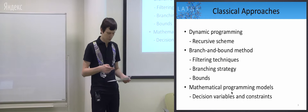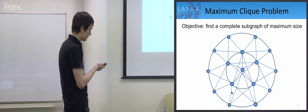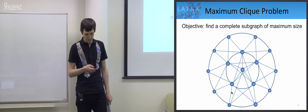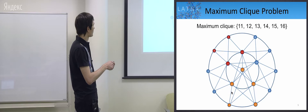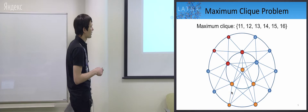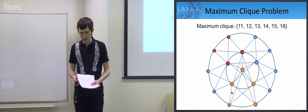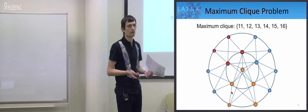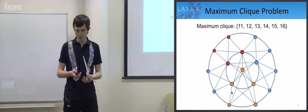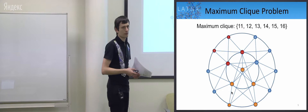Here is an example for the maximum clique problem. We want to find a complete subgraph of maximum size. Here we can see different cliques. For example, here is size 4, size here is 5. But the maximum clique is in the center — it has 6 vertices. In a big graph it is not easy to find the maximum clique. In other words, we want to find some cluster of maximum size, or a part of our network which is completely connected and has the largest size.